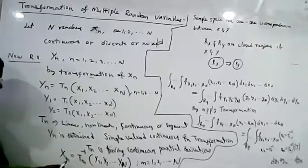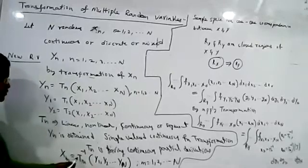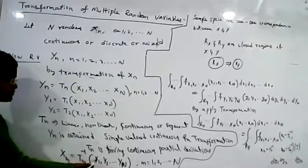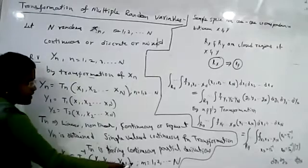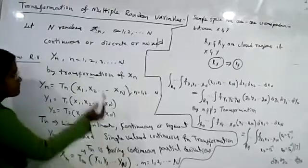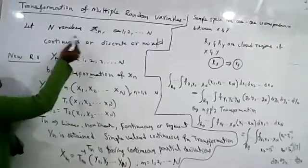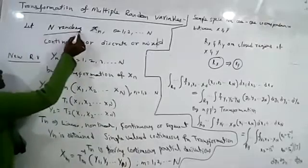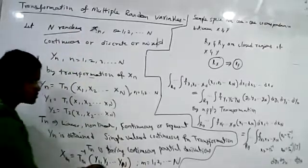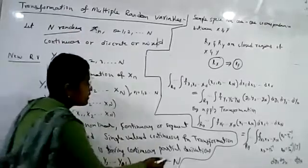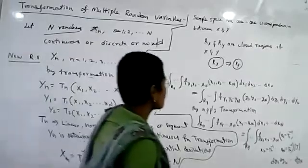So x_n is given by T_n inverse of (y_1, y_2, ..., y_n). We have considered N number of random variables, so n is also varying from 1 to N.